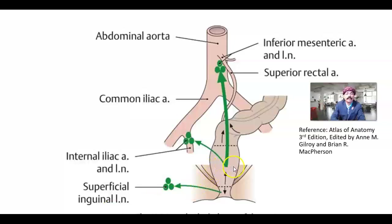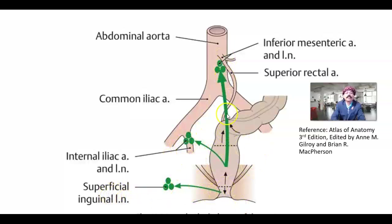From the upper part of the rectum, lymph follows the superior rectal artery to the inferior mesenteric lymph nodes. From the lower part of the rectum and the anal canal, lymph goes to the internal iliac lymph nodes. From the extreme lower part of the anal canal, lymph drains to the inguinal lymph nodes. The lymph nodes are very important because the rectum is a common site of cancer. Rectal carcinoma is not uncommon, and cancer cells may spread initially through the lymphatics, then through the veins, and then locally to surrounding tissue.